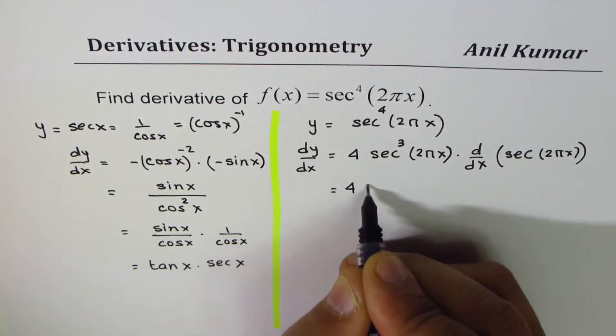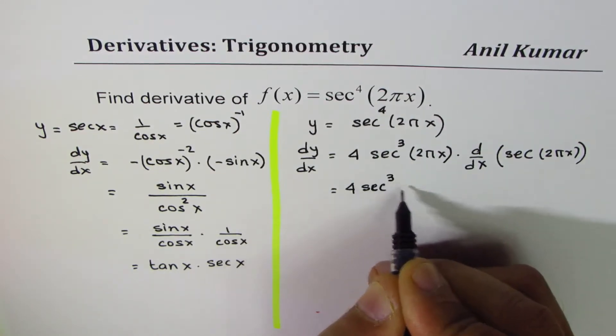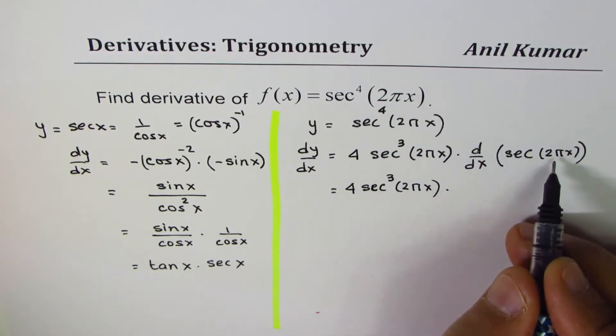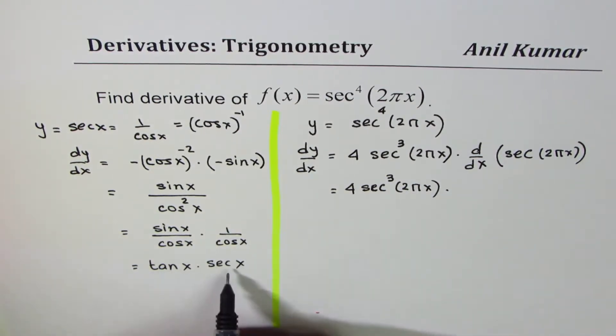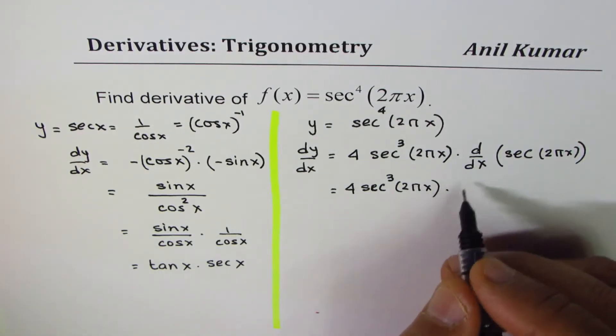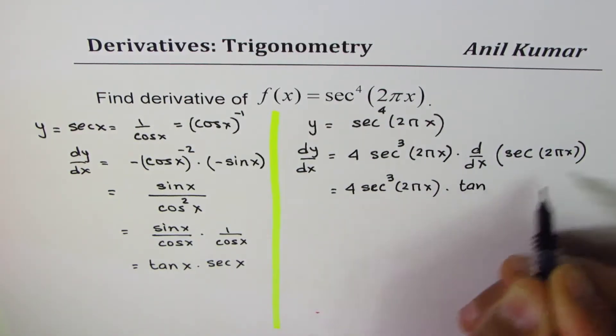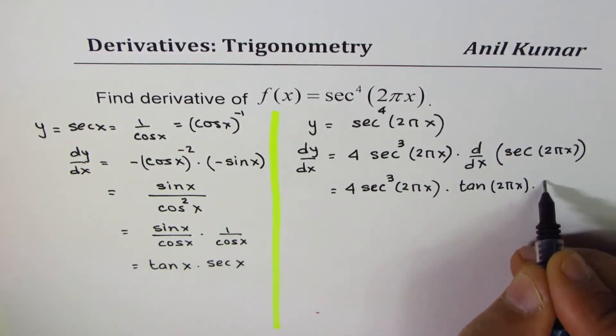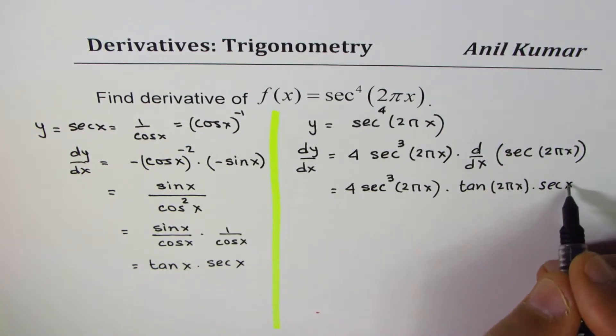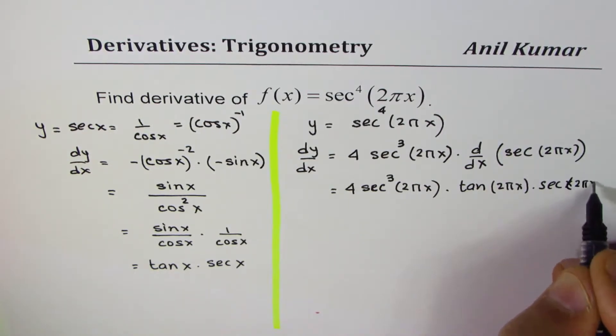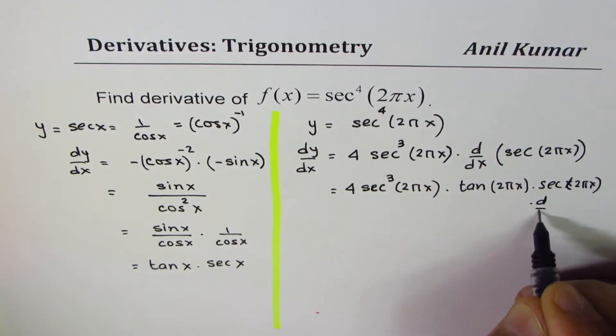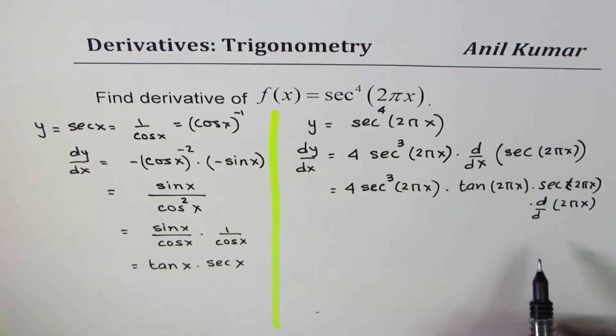So that gives us 4 secant cube 2 pi x. Now derivative of secant x is tan x secant x. So let me write this as tan 2 pi x times secant 2 pi x, times the derivative of the inside function - d/dx of 2 pi x. So you are applying the chain rule here.